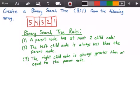Specifically in descending order from the greatest value to the least value. There's a few rules that we need to look at when creating a binary search tree. The first rule is that a parent node has at most two child nodes. The second rule is that the left child node is always less than the parent node. And the third rule is that the right child node is always greater than or equal to the parent node.